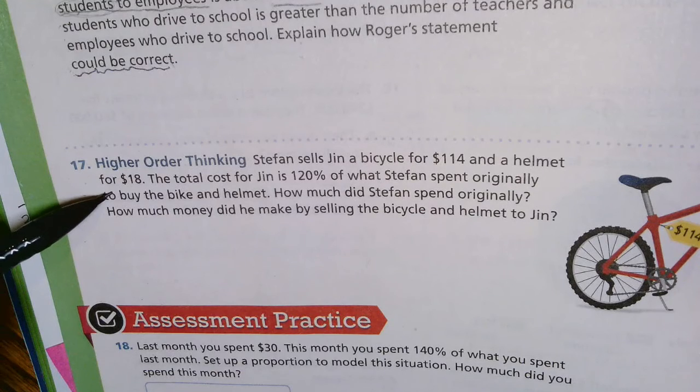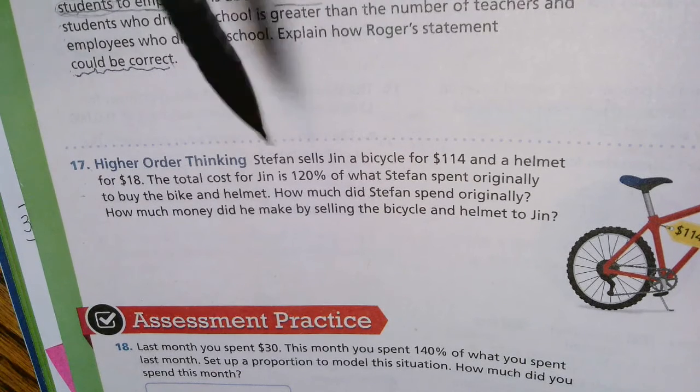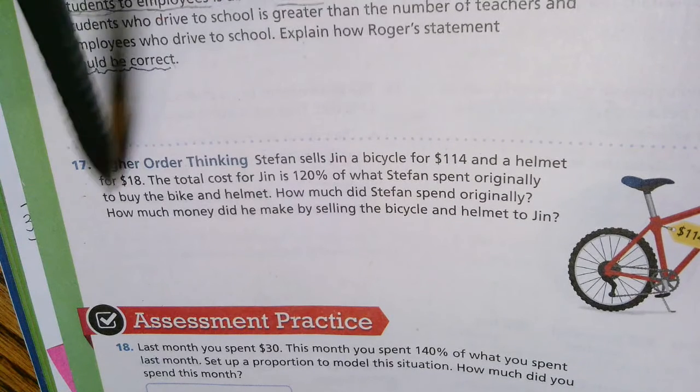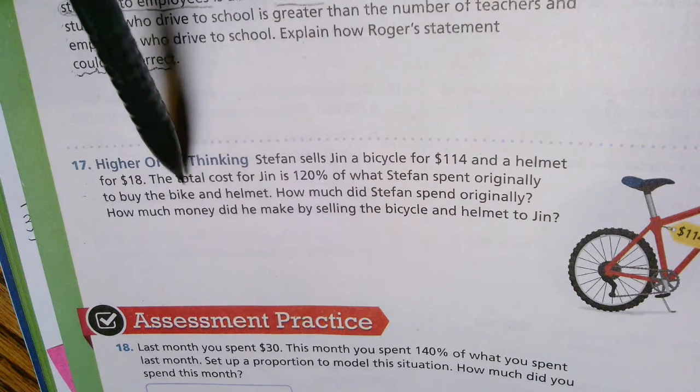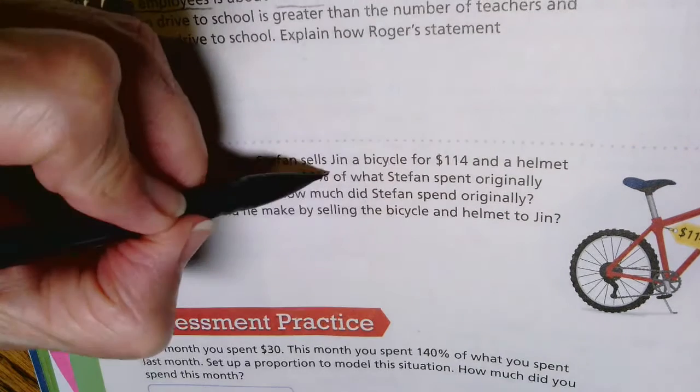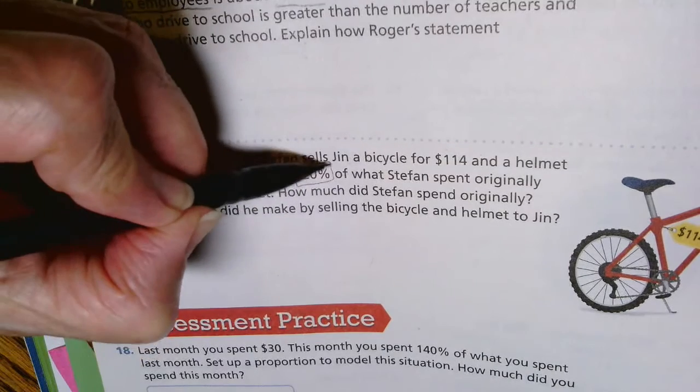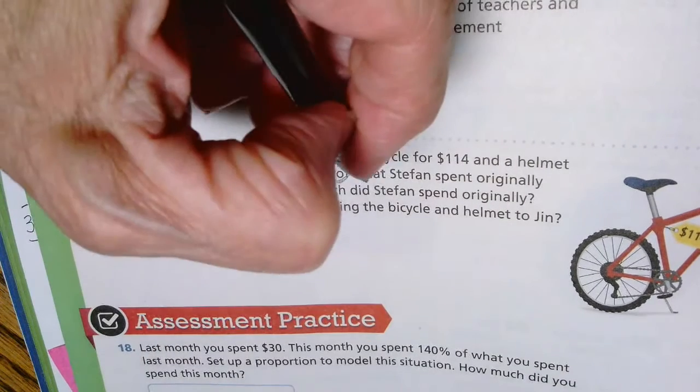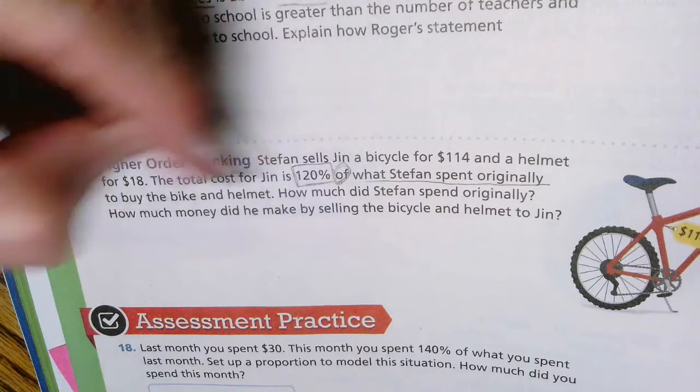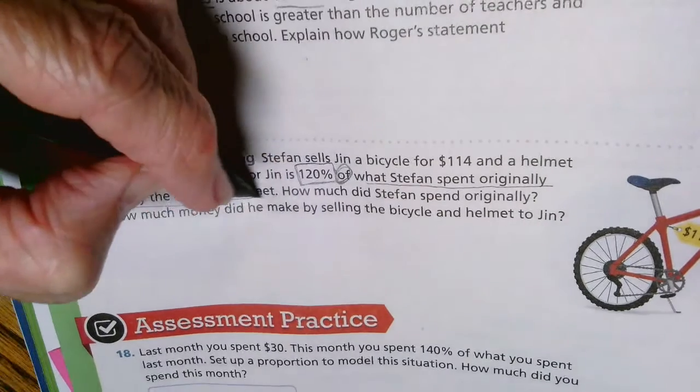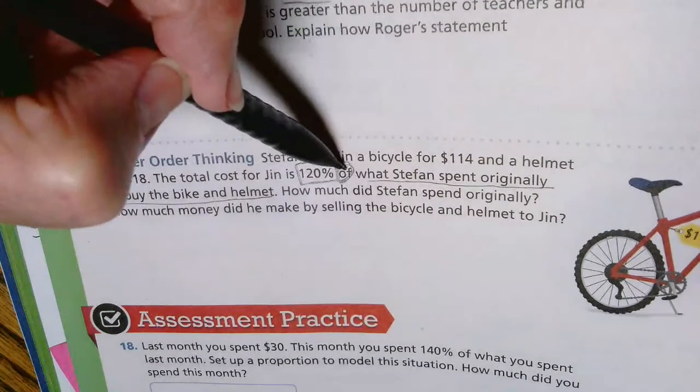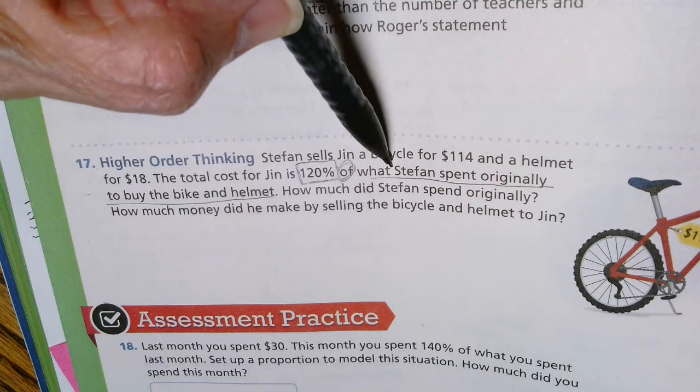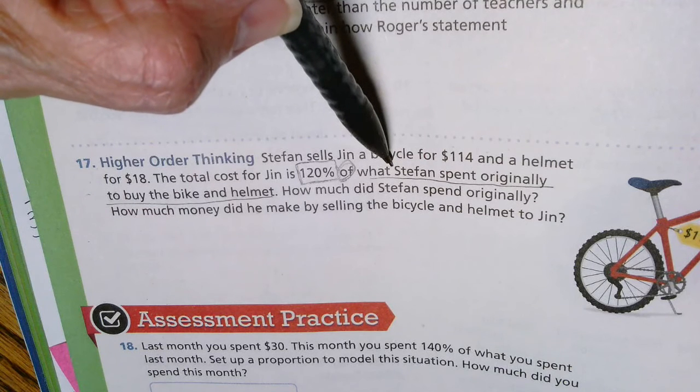Let's look back at the wording in our problem. Stefan sells Jin a bicycle for $114 and a helmet for $18. The total cost for Jin is 120%—there is a percentage we can use—of what Stefan spent originally to buy the bike and helmet. When we see that word 'of,' whatever is following it is going to be what the second term of the proportion is going to be.